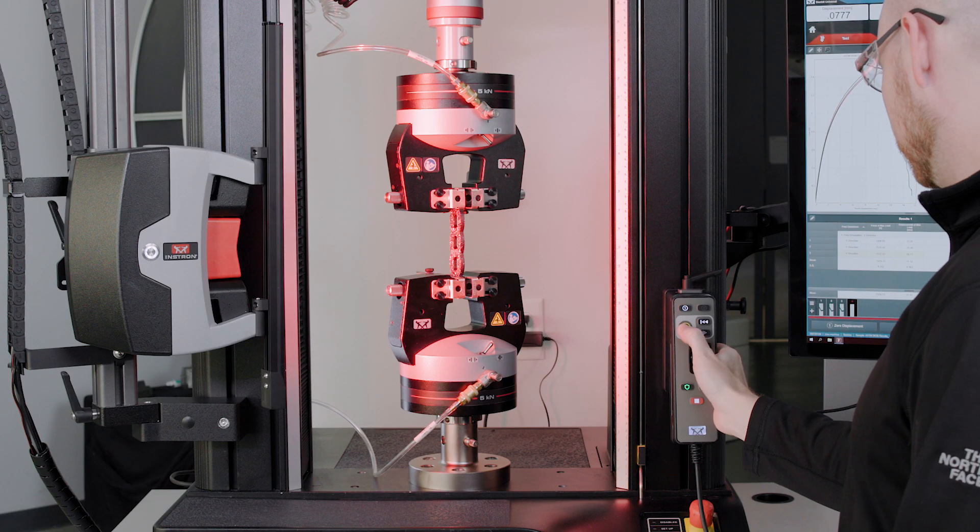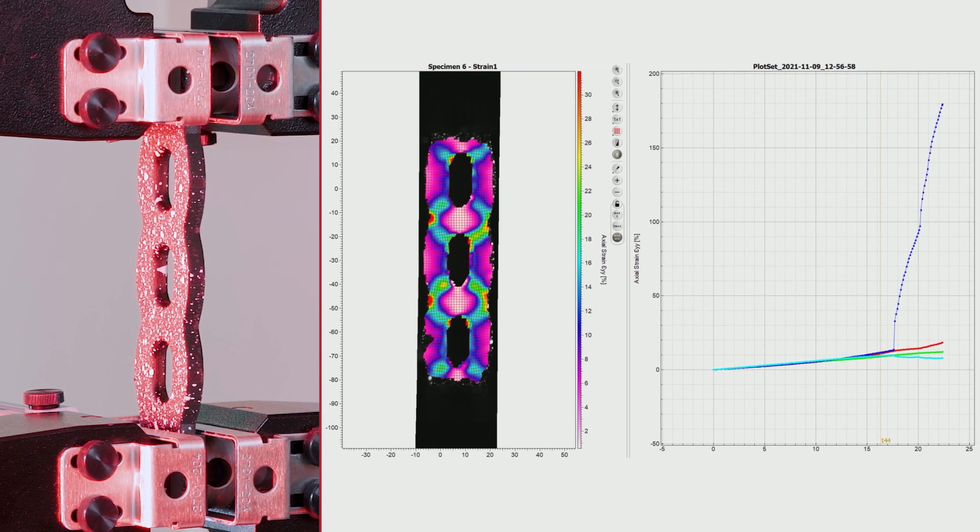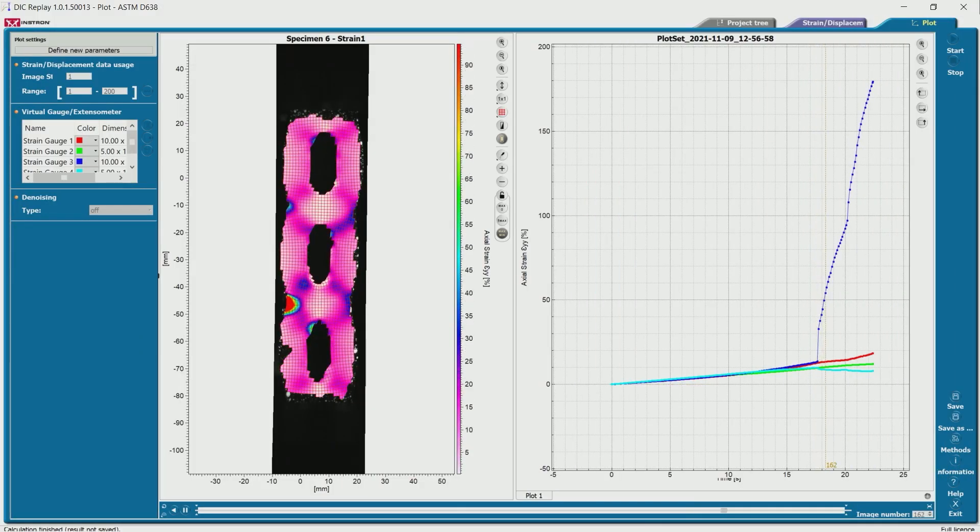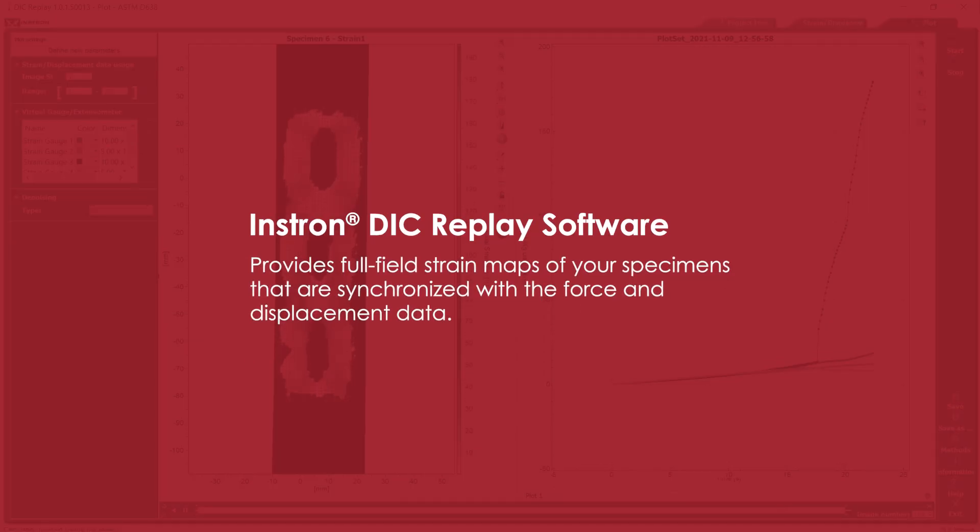The AVE2 can also record images of your testing to be used with Instron's optional DIC Replay software. DIC Replay is a 2D digital image correlation software that provides full field strain maps of your specimens that are synchronized with the force and displacement data.